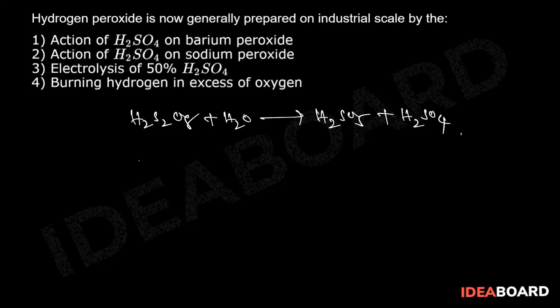This Caro's acid, H2SO5, again reacts with water molecules to give H2O2 plus H2SO4. Like this, we get hydrogen peroxide at the anode. At the cathode, reduction will take place.